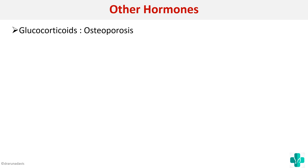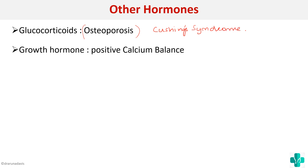Other hormones involved in calcium homeostasis include glucocorticoids, growth hormone, and estrogen. Glucocorticoids decrease calcium — in Cushing syndrome there is osteoporosis, which illustrates this effect. Growth hormone maintains a positive calcium balance, increasing serum calcium levels as it supports growth.